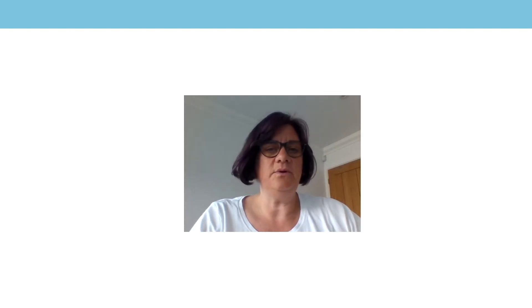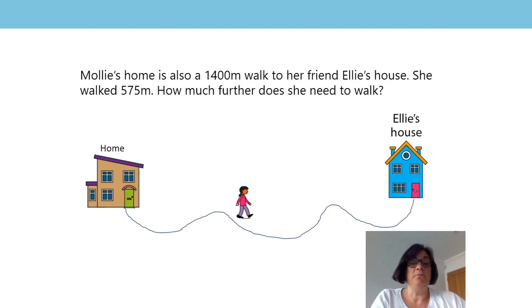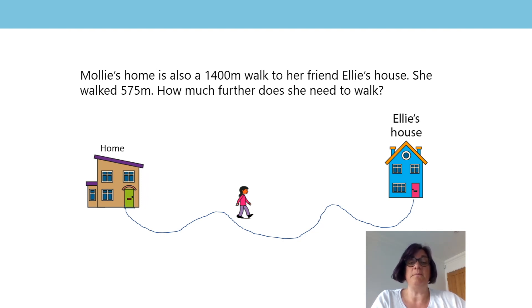In this lesson, we're now going to look at when the subtrahend decreases. Molly's home is also a 1400 metre walk to her friend Ellie's house. She walked 575 metres. How much further does she need to walk? Well, the total distance from her home to Ellie's house is still 1400 metres, so this is still our minuend. The distance she walked is the subtrahend, 575 metres. By subtracting the subtrahend from the minuend, we can see how much further she has to go — the difference is 825 metres.